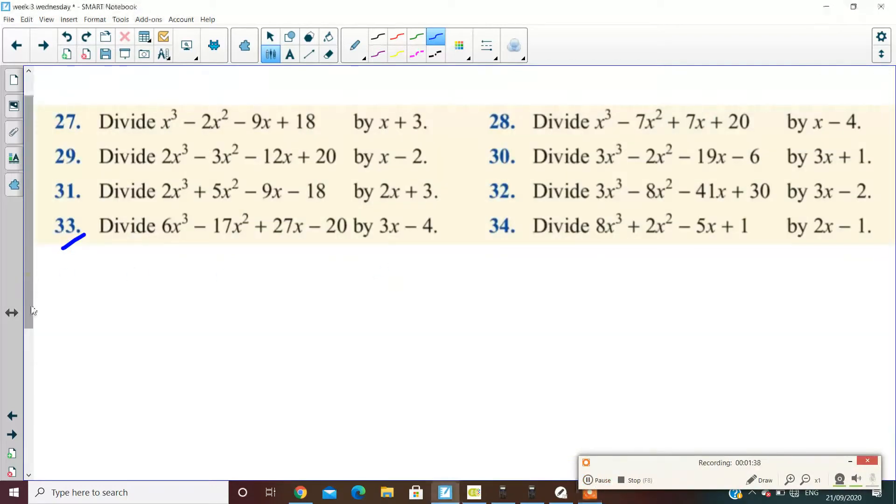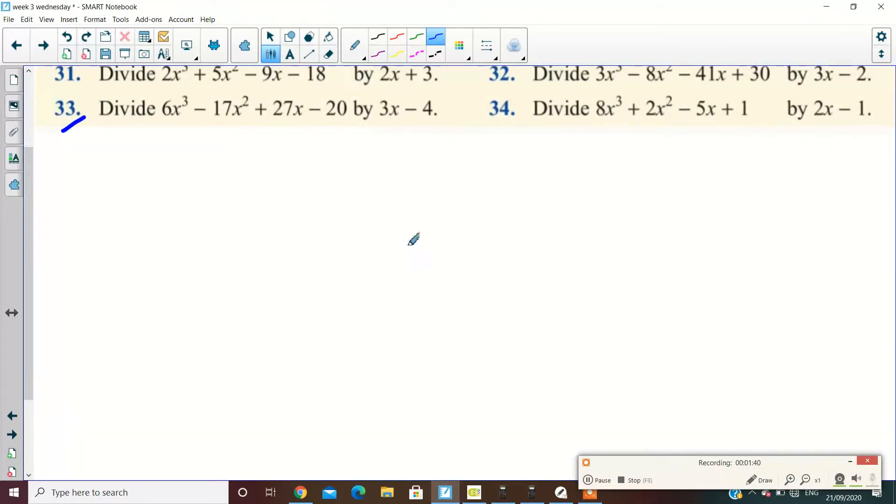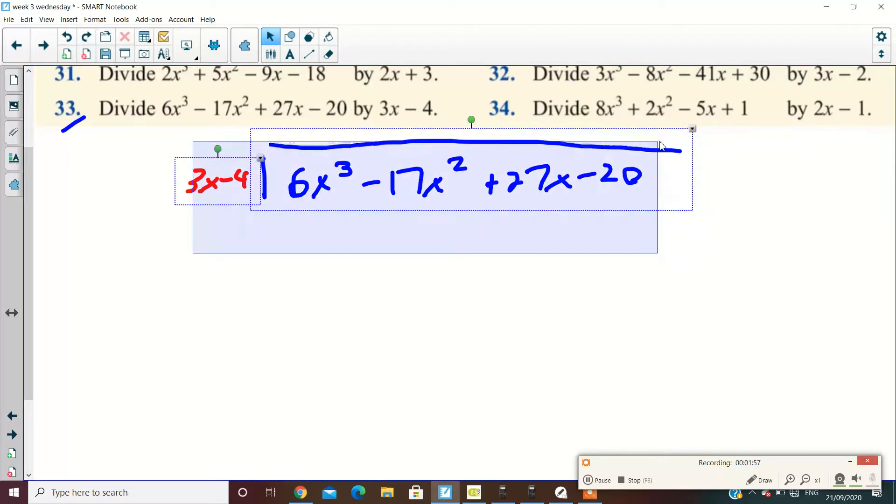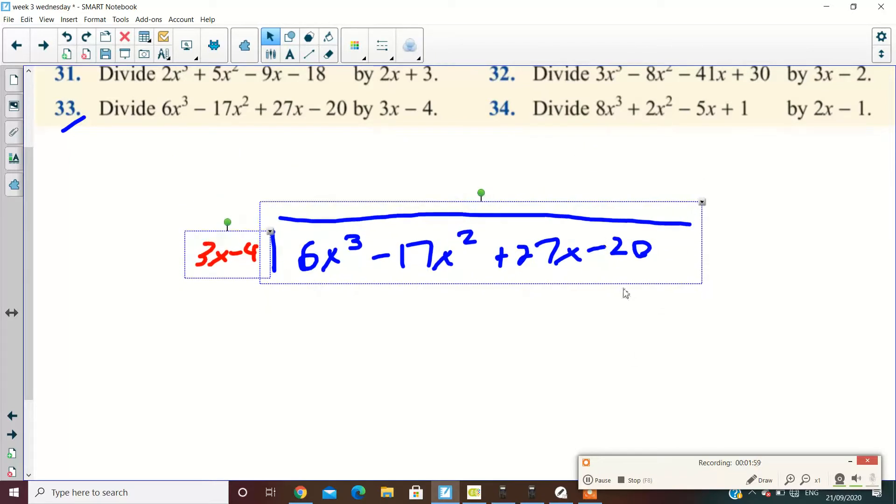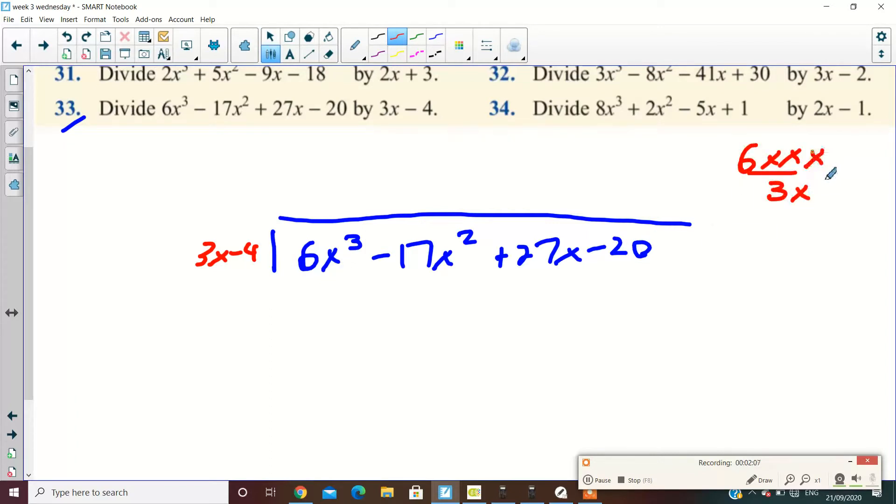2x plus 1 minus minus 0. Okay. Alrighty. 6x³. We're doing 33. I'm going to send in x² plus 27x, take away 20. All divided by 3x minus 4. All right. So what do we get here? 6x³ divided by 3x. What do we get?